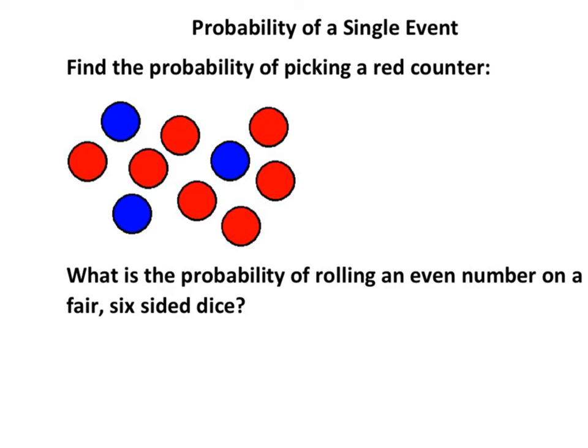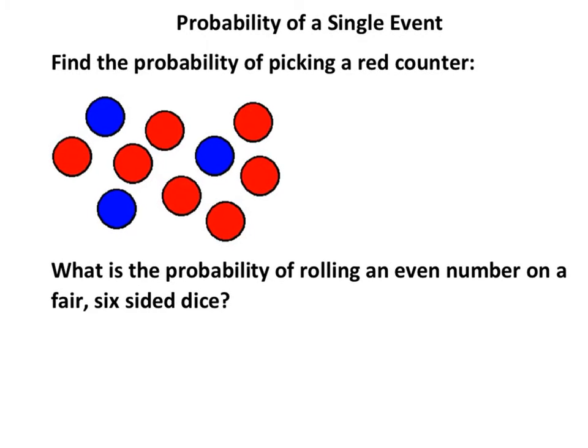Now we're going to look at probability of a single event. What you want to think of is I would try and do it as a fraction if you're not sure. Both of these we're going to do as a fraction because probability has got to be a number - a fraction, percentage, or decimal. Any of those three is fine, but if you're not sure I would use fraction because it's what you want being the numerator, the total outcomes being the denominator.